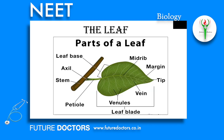The Leaf and its Parts: The leaf is a lateral, generally flat structure borne on the stem. It develops at the node and bears a bud in its axil. The axillary bud later develops into a branch. Leaves originate from shoot apical meristems and are arranged in an acropetal order. They are the most important vegetative organ for photosynthesis. A typical leaf consists of three main parts: leaf base, petiole, and lamina.